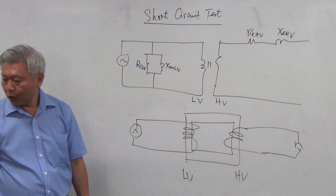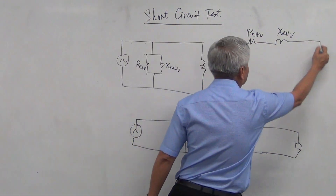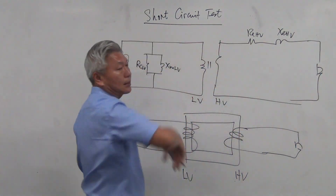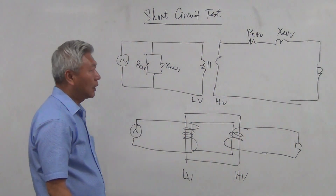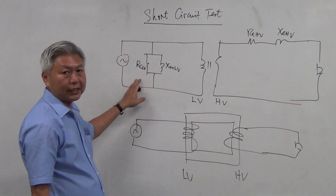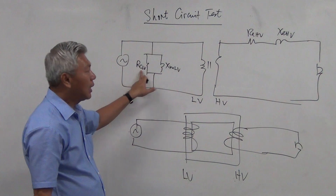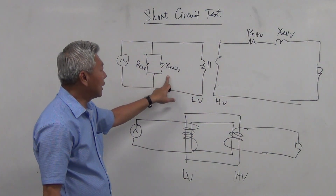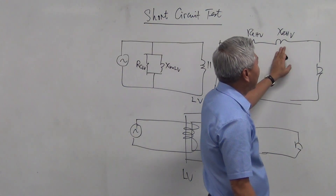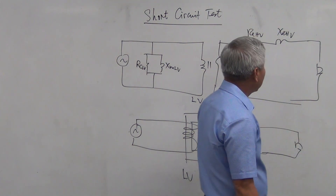We are going to do another experiment which is something like the opposite of the open circuit test, and it's called the short circuit test. Before we talk about the experiment, let's look at our equivalent circuit again. This is the equivalent circuit — the core loss resistance and magnetizing reactance at the low voltage side, the equivalent winding resistance and the equivalent leakage reactance at the high voltage side.